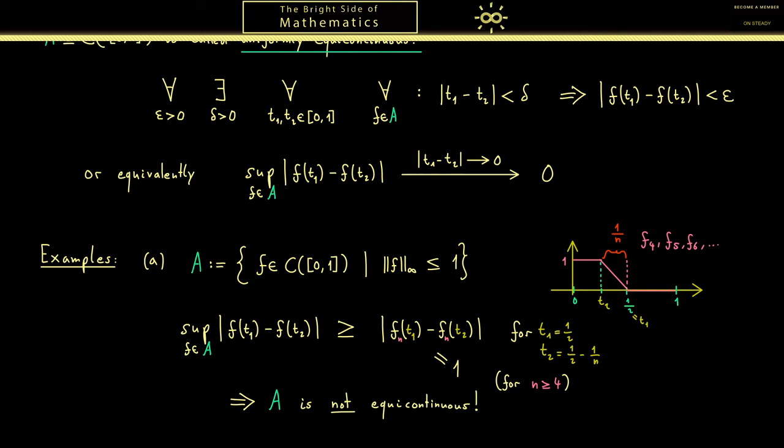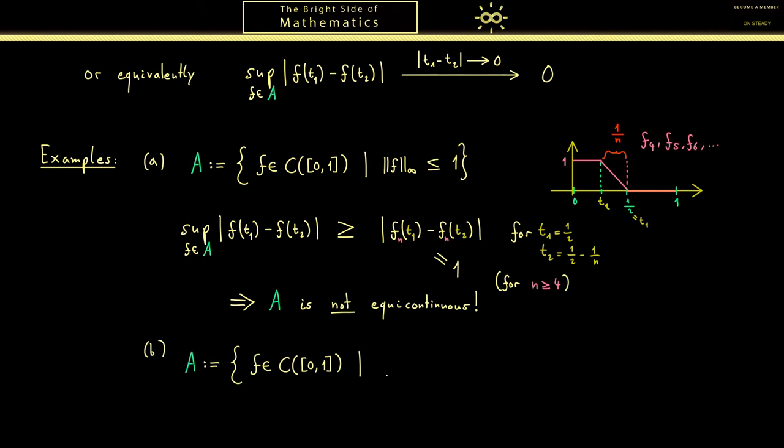Okay so let's do a positive example now. Again F should be a subset of the continuous functions and now every function there should be continuously differentiable. This means that f' makes sense and that this is also a function in our Banach space. Hence we can look at the supremum norm and I want that to be less or equal than 2.